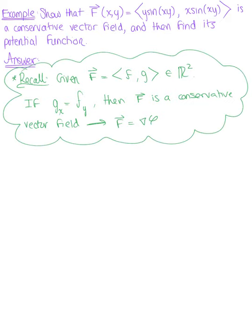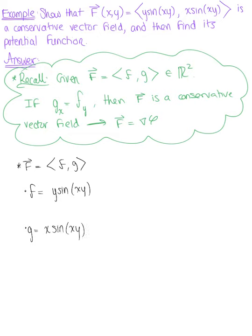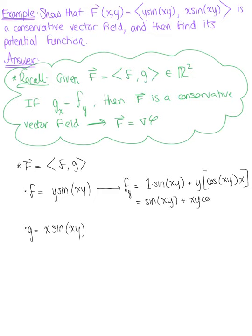We want to apply this test to what is given. We have the vector field in R2 where component F is defined as Y times sine of XY, and component G is defined as X times sine of XY. We take the partial derivative of F with respect to Y using the product rule: this gives 1 times sine of XY plus Y times cosine of XY times X, leaving us with sine of XY plus XY times cosine of XY.